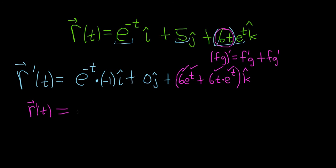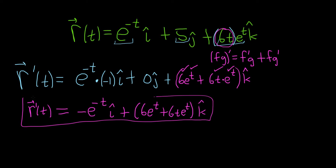So r prime of t is equal to negative e to the negative t i hat. And then we have this other piece here with the e's. So parentheses 6 e to the t plus 6t e to the t, and then we have our k hat. And that would be the final answer. I hope this video has been helpful.